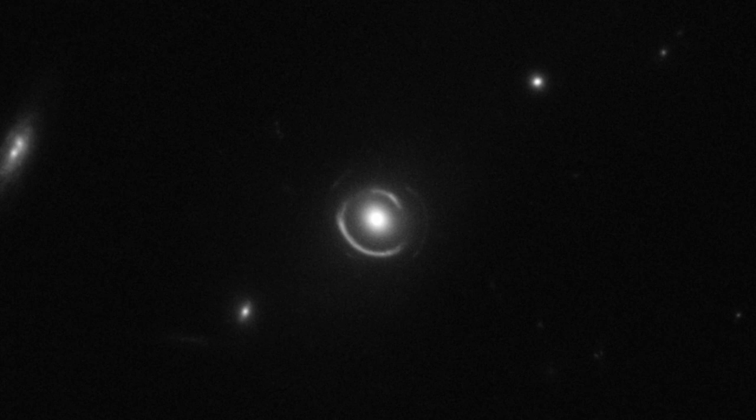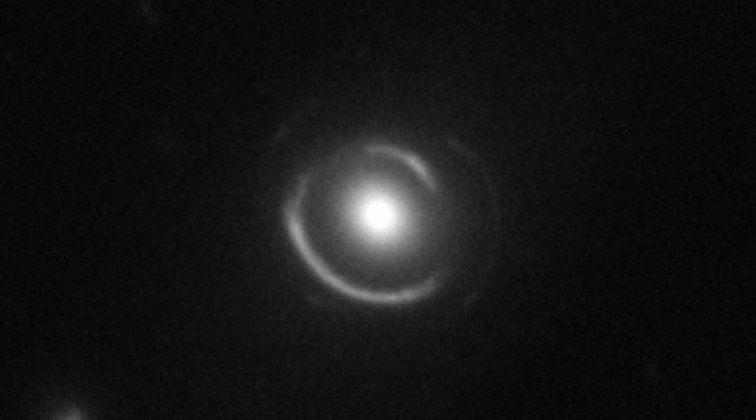A few years ago, Hubble observed an even rarer cosmic coincidence, an incredible double ring where Hubble can see the light from not one but two galaxies, perfectly aligned behind a closer galaxy.